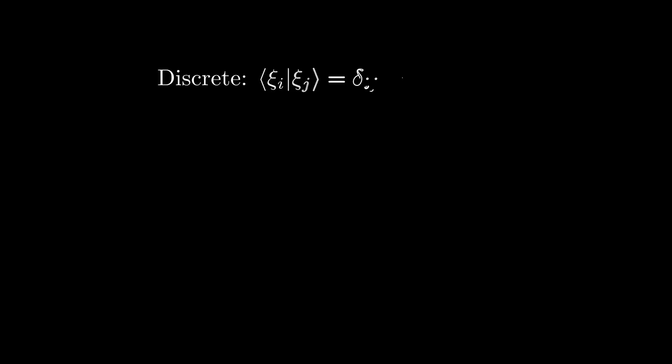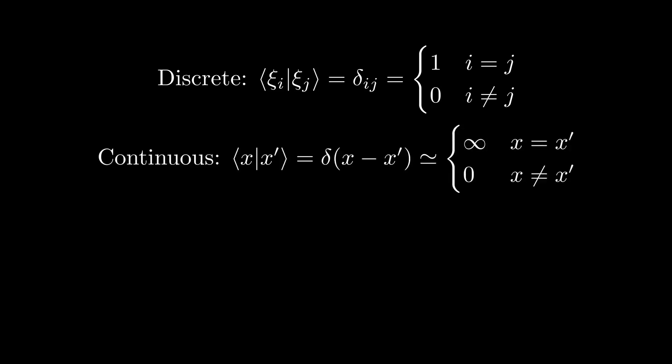The definition of orthonormality differs for discrete versus continuous spectra. For discrete spectra, we define orthonormality to mean that the inner product of two eigenstates is the Kronecker delta, which is 1 when both eigenstates are the same and 0 when they differ. For continuous spectra, we instead define orthonormality to mean that the inner product of the two states is the Dirac delta of the difference of the two parameters used to parameterize the eigenstates.